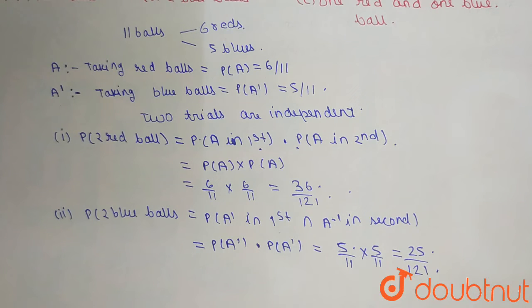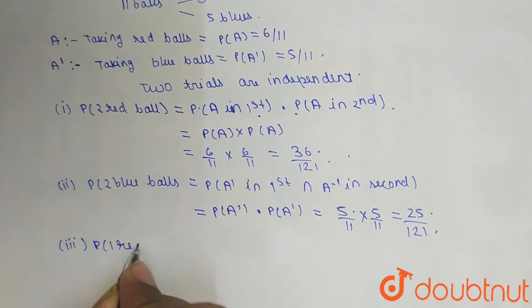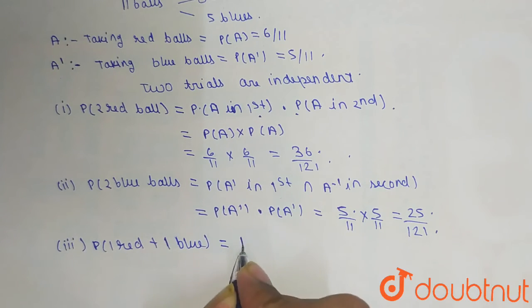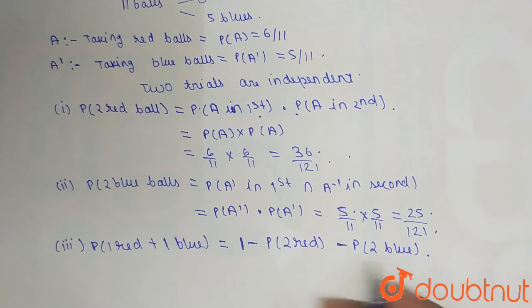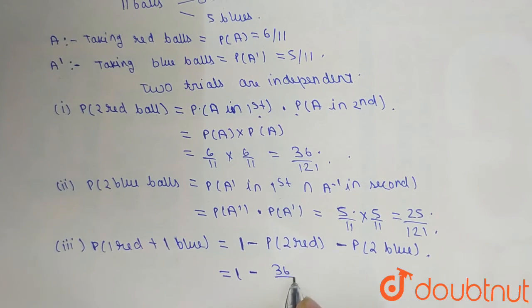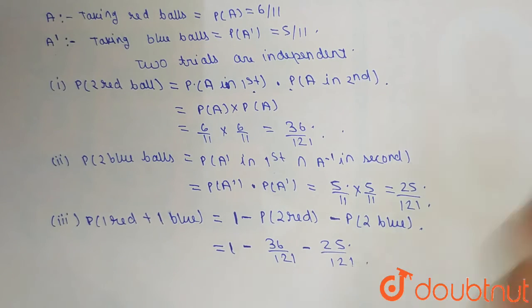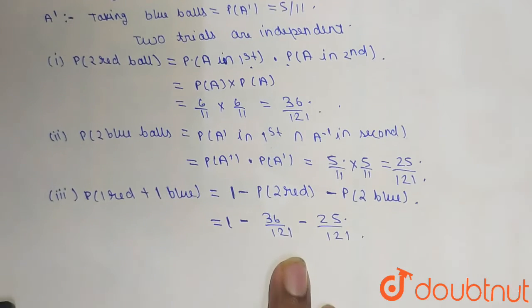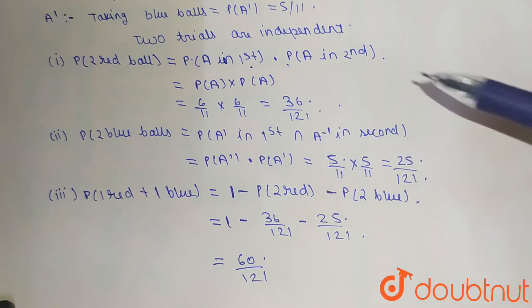Now for the third part, we have to find the probability of one red and one blue ball. This equals 1 minus the probability of two red balls minus the probability of two blue balls, which is 1 minus 36/121 minus 25/121. Solving this gives us 60/121. So this is the probability for taking one red and one blue ball.